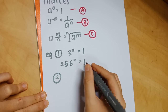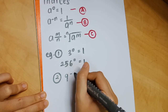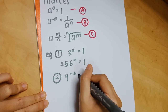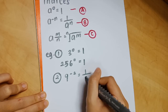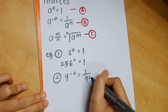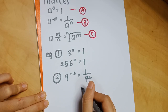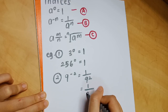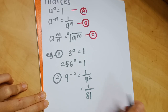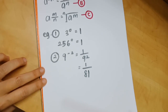The second example is for concept B: 9 to the power of negative 2. If you write it as 1 over 9, it becomes positive 2. The negative 2 changes to positive 2, giving you 1 over 81.